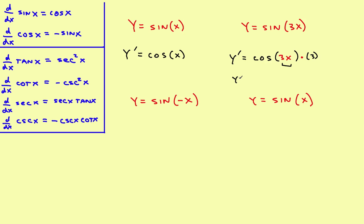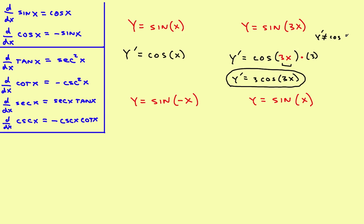Usually you'll go ahead and move the 3 out in front, making it 3 times the cosine of 3x, and you're done. Some students try to multiply the 3 times the 3 and make it 9x — that is wrong. Y prime is not equal to cosine of 9x. Take the 3 and move it all the way out in front.